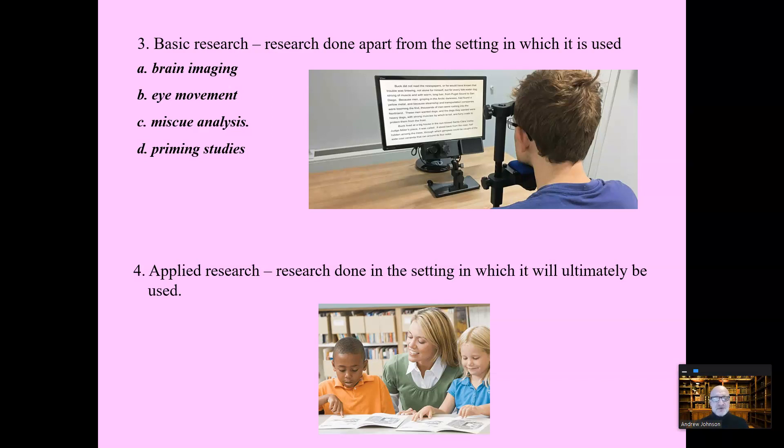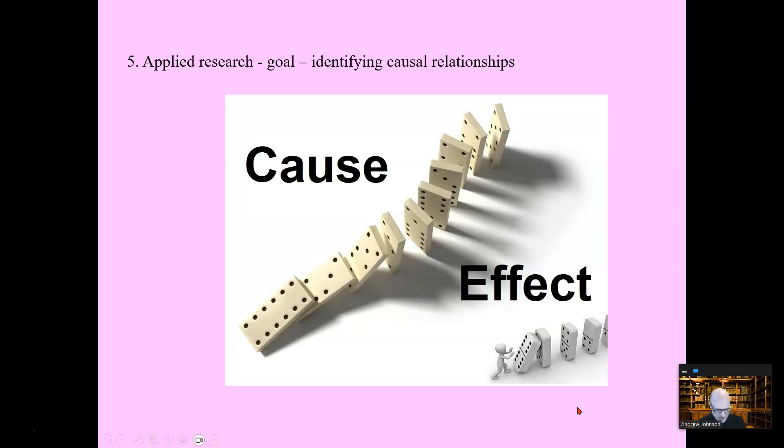Brain imaging, that's basic research. Eye movement research, miscue analysis, priming studies. These are all examples that help us understand reading and the reading process, done not in a classroom, but used to create data that helps us understand reading. Applied research is done in the setting in which it will ultimately be used. It's to see how something functions in the real world. It's done in the classroom to see if something is effective.